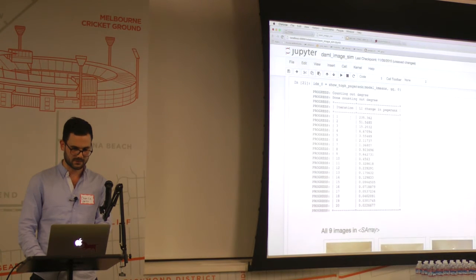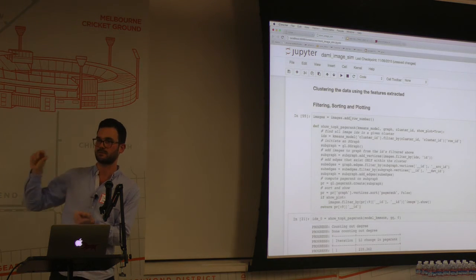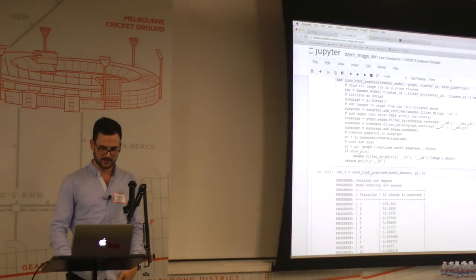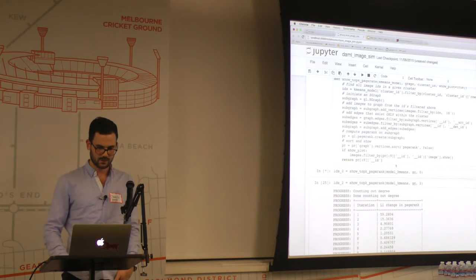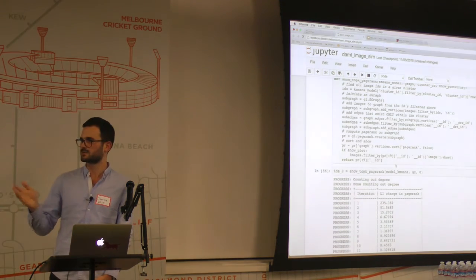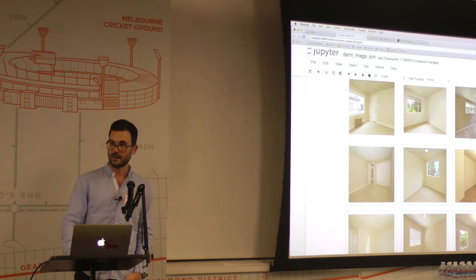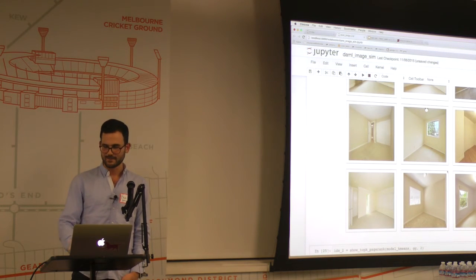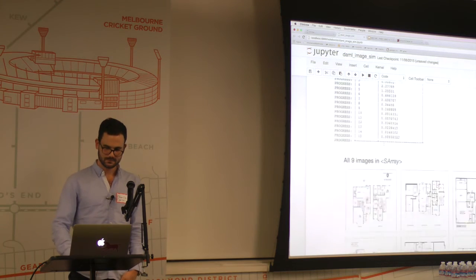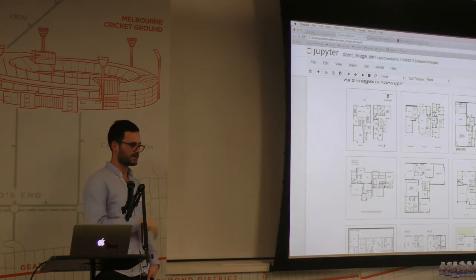I'll write a function that takes the similarity graph, takes cluster IDs, creates a subgraph based on all IDs belonging to the same cluster, runs PageRank on it, and displays the top 10 most representative images. The SFrame has lazy evaluation, so many operations haven't materialized yet. Running PageRank on the first cluster gives all empty rooms — very similar, empty, nothing special. The second cluster gives floor plans — you know, the kind you see on Craigslist when buying a house. That's working pretty well.